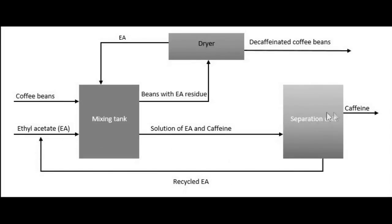The other output stream from the mixing tank carries the beans with small amounts of solvent, which enters the dryer where ethyl acetate is recovered and sent back into the mixing tank. The decaffeinated coffee beans are obtained from another output stream from the dryer.